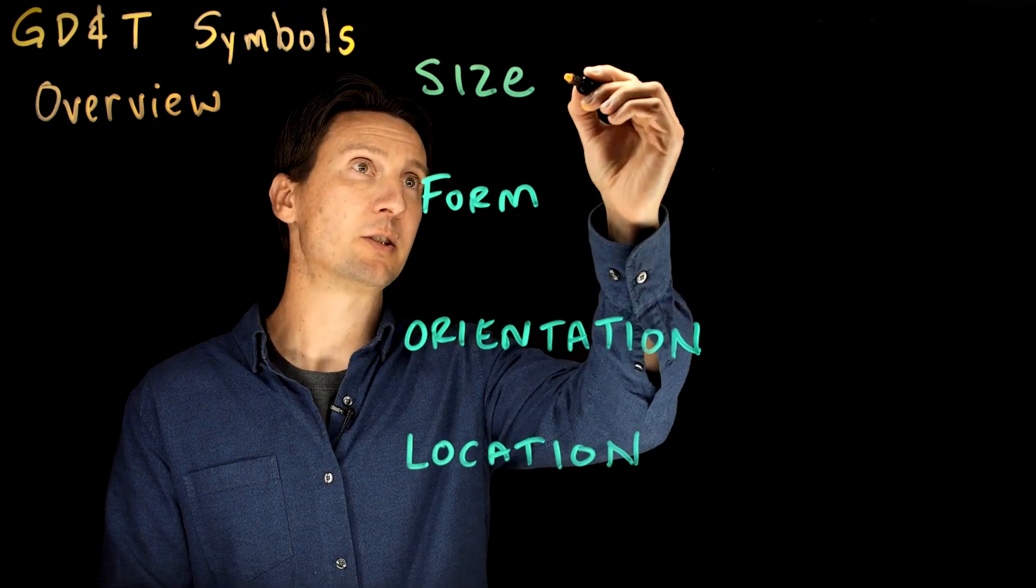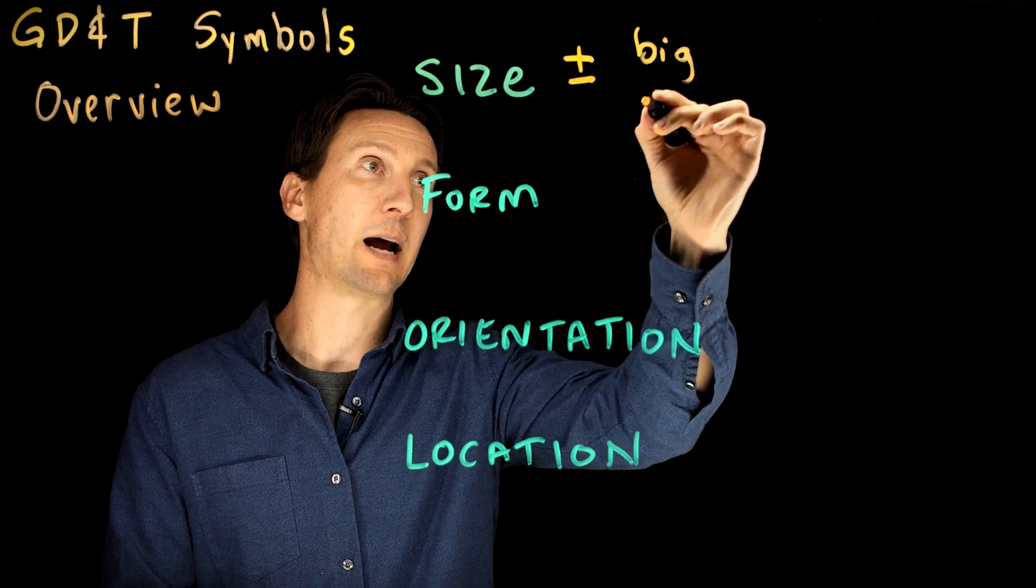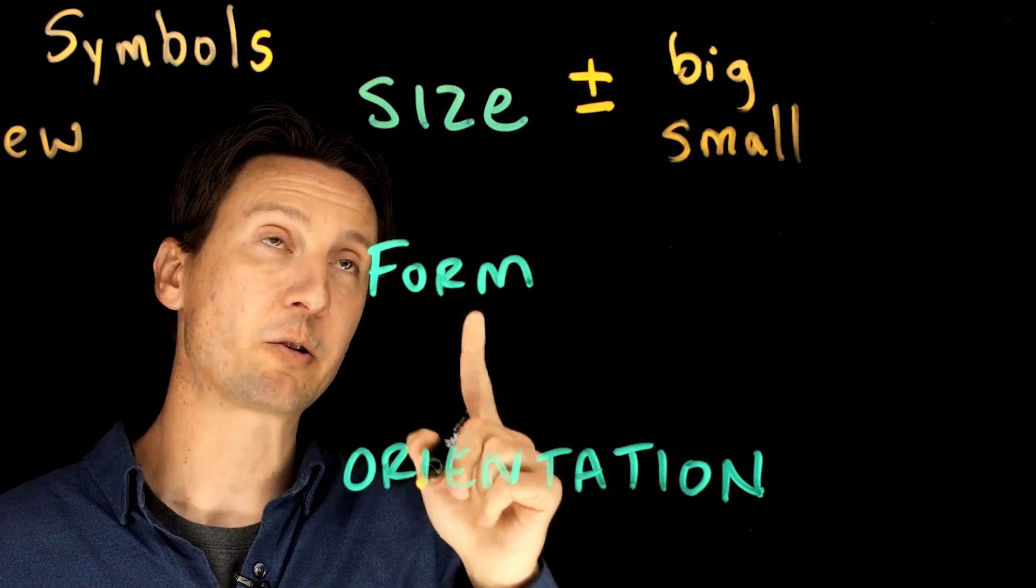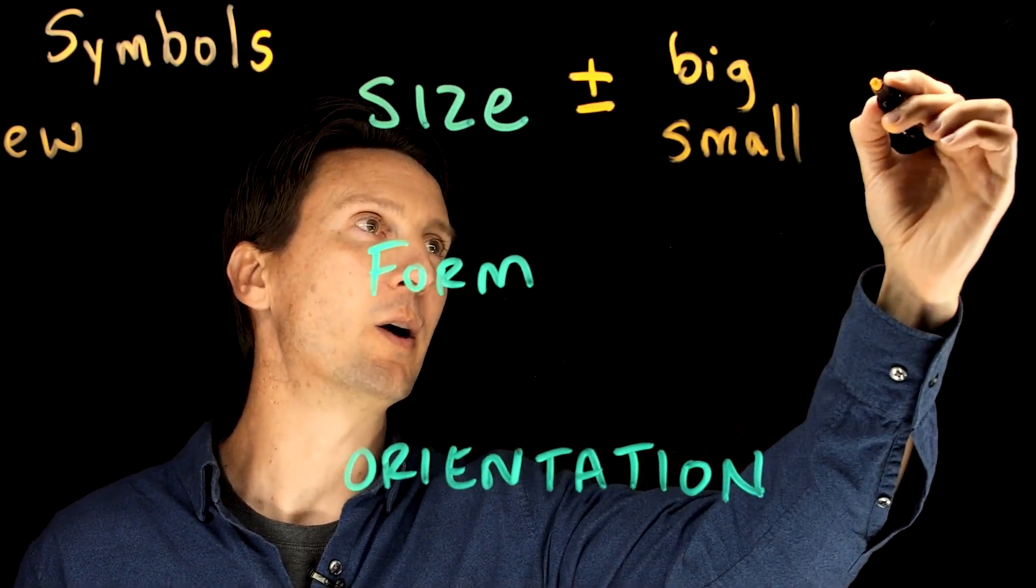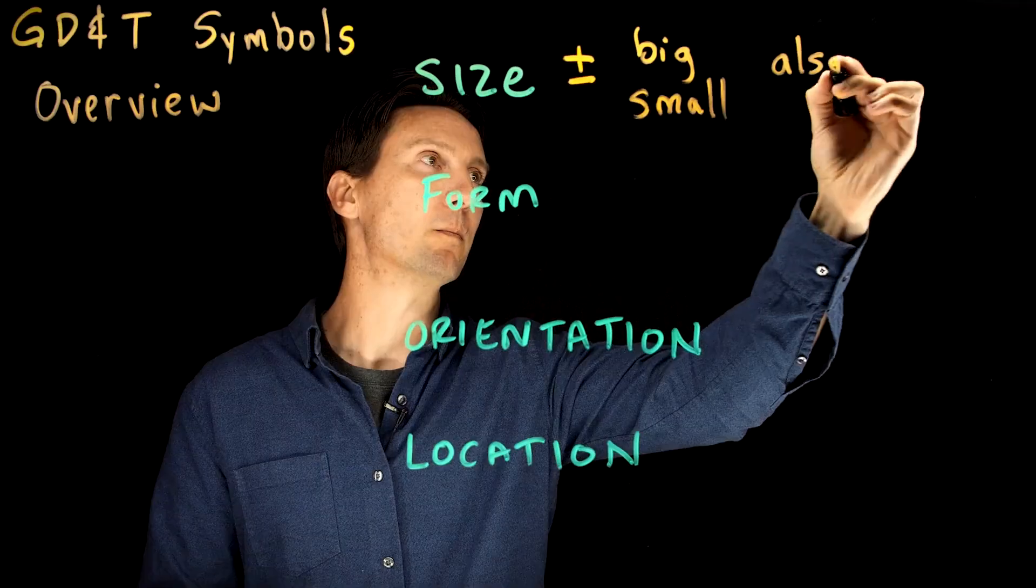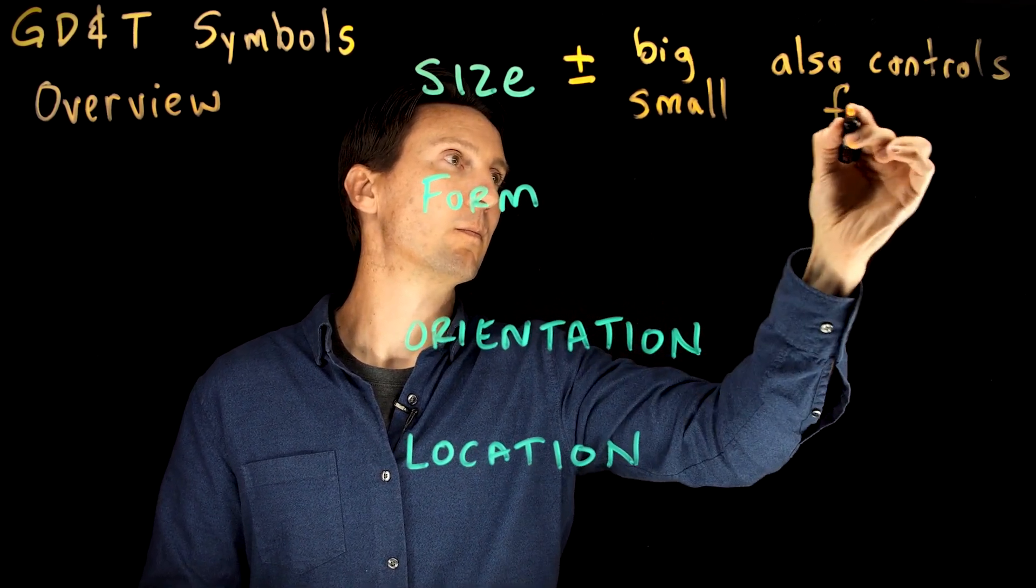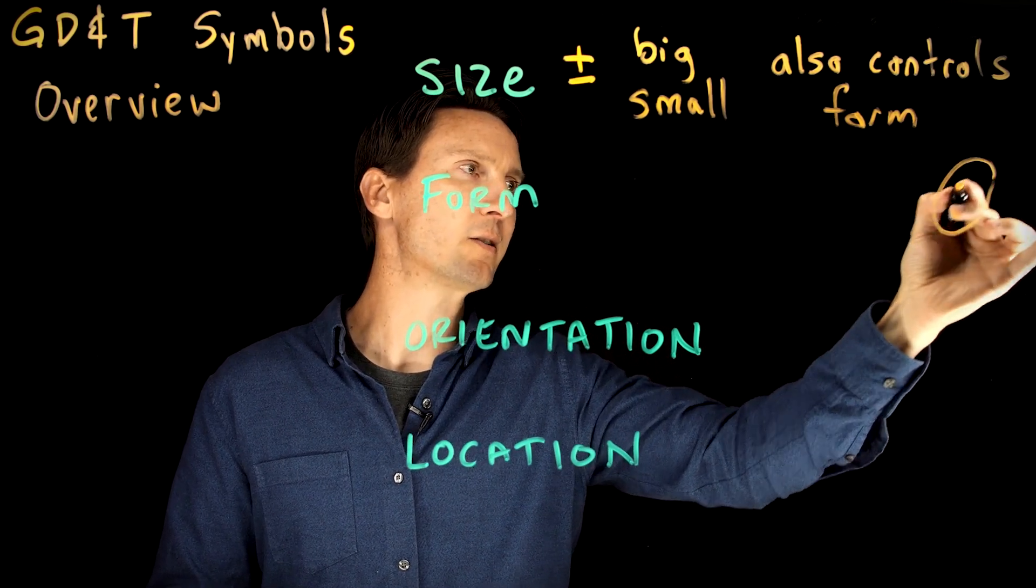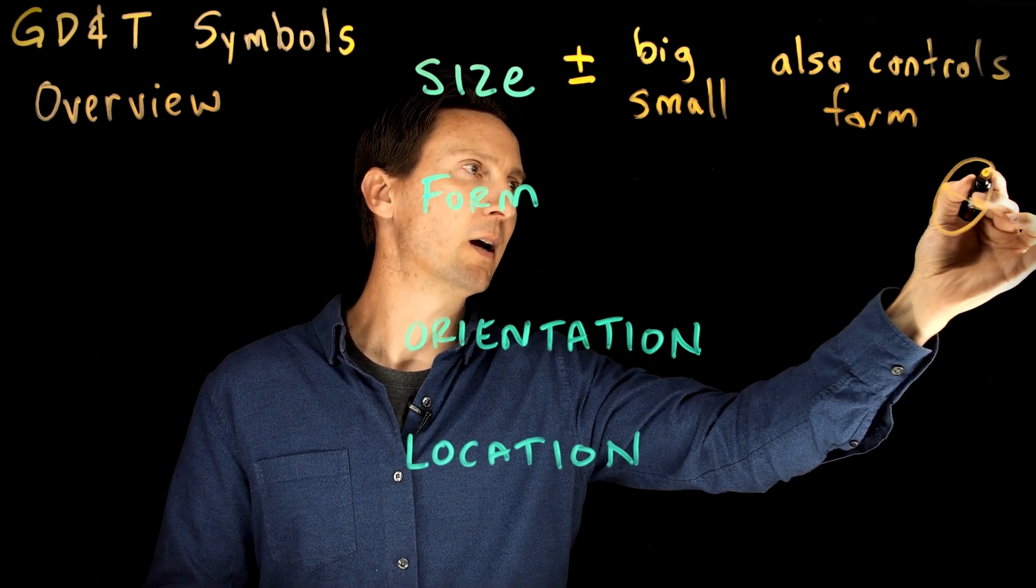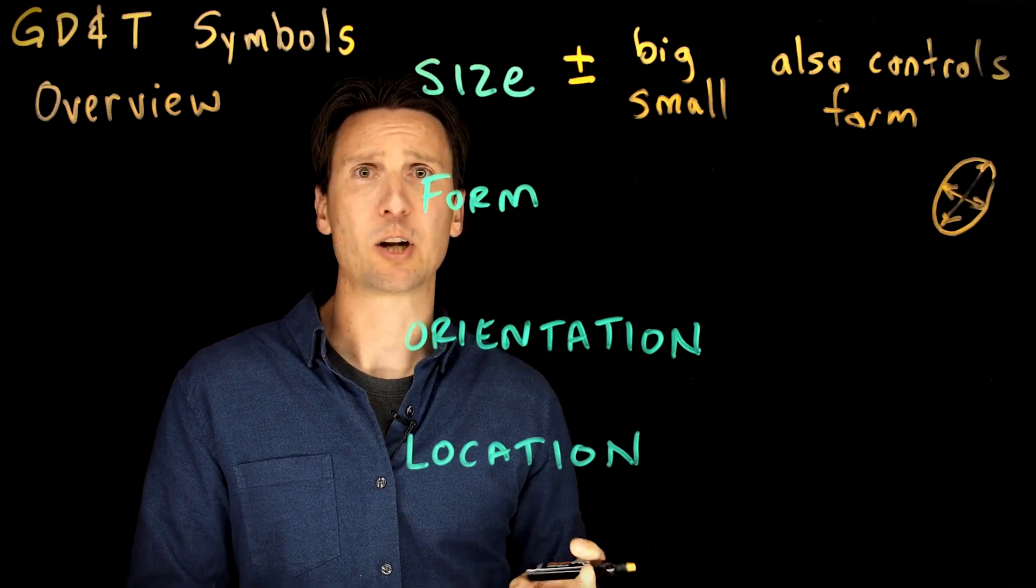Size is just a good old plus minus and that's going to control how big and how small a feature can be. Another key thing with size is through something called rule number one, which we'll talk about in another video, it also controls form. That makes sense - if you have a hole and you give it a size tolerance, this is the smallest it'd ever be and this is the biggest it'd ever be. So that size tolerance would automatically control the shape of the feature as well.